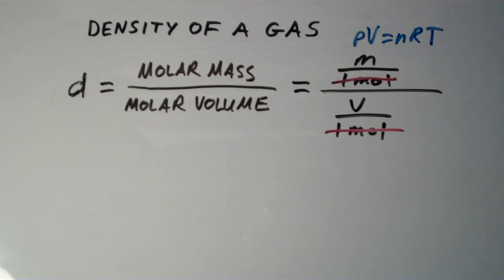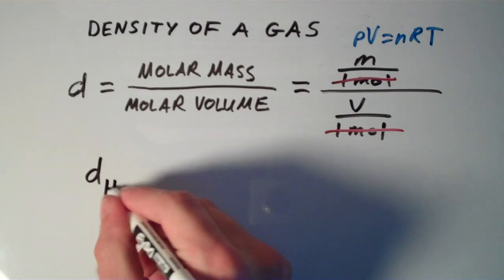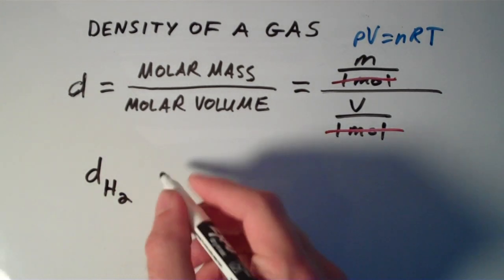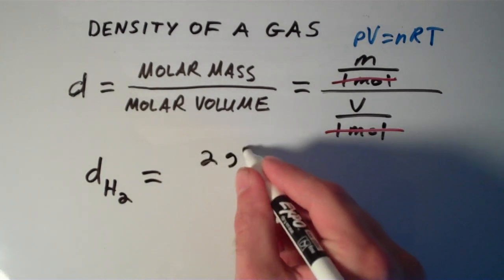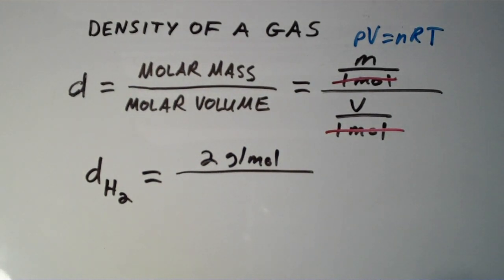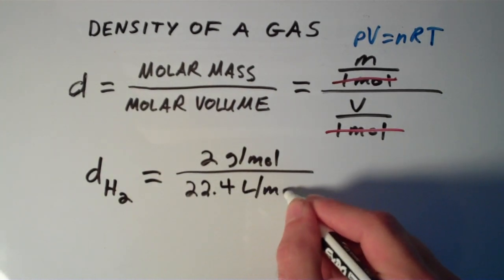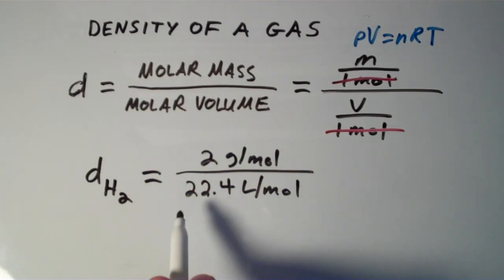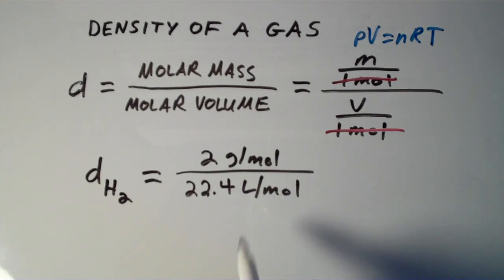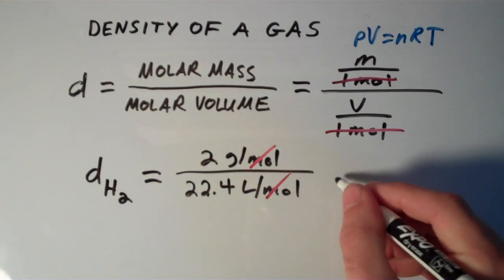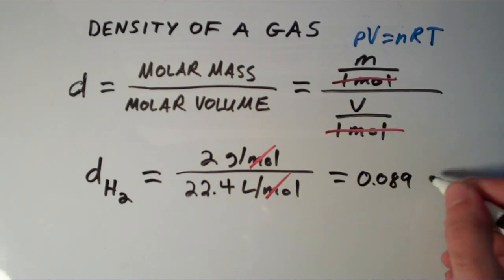Let's calculate the density of a couple of different gases at STP and see if we can make some generalizations about density and molar mass. I'm going to calculate first the density of hydrogen gas, H2, at STP. The density of H2 gas is the molar mass of H2, which is approximately 2 grams per mole, divided by the molar volume of an ideal gas at STP, which is always 22.4 liters per mole. Moles cancel, and I'm left with a density in grams per liter that turns out to be 0.089 grams per liter.